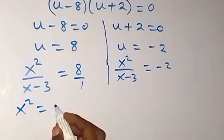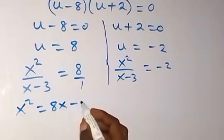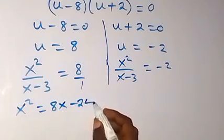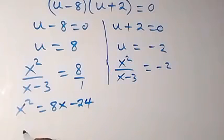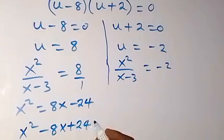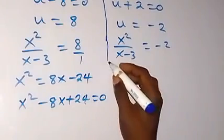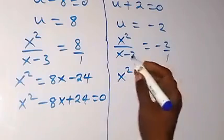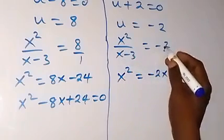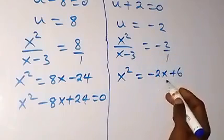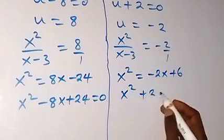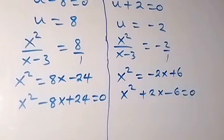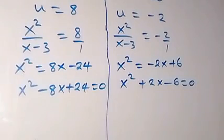Cross-multiplying the first case: x² = 8(x − 3), which gives x² − 8x + 24 = 0. Cross-multiplying the second case: x² = −2(x − 3), giving x² + 2x − 6 = 0.